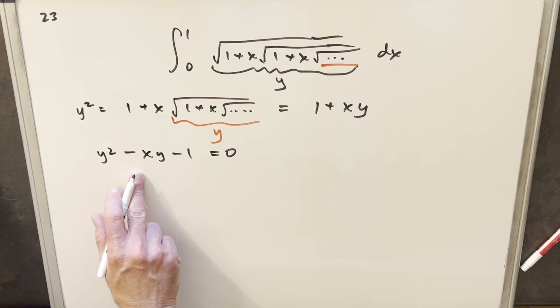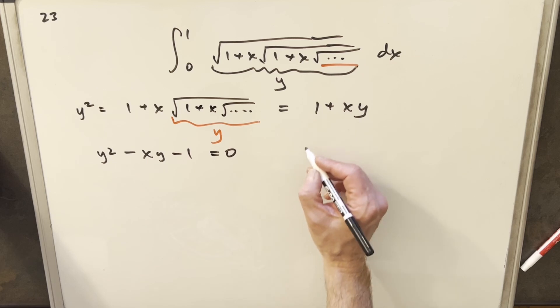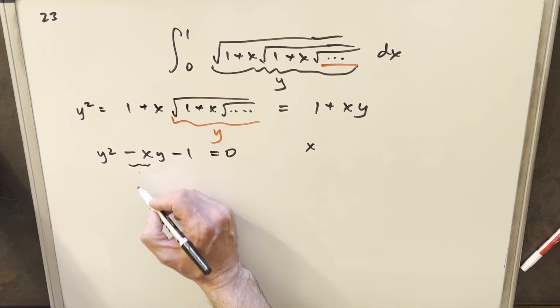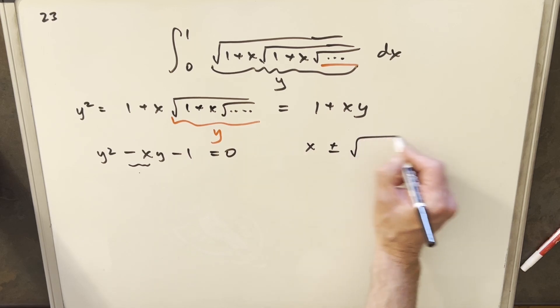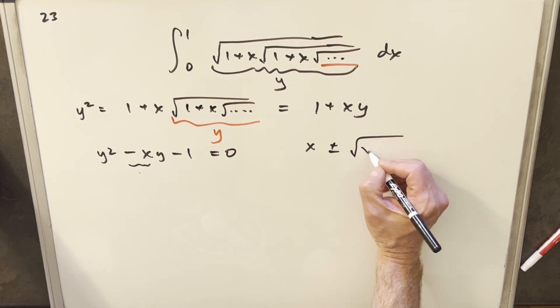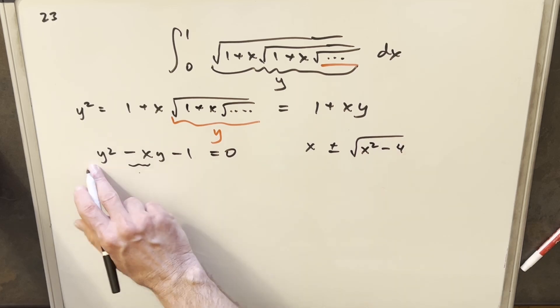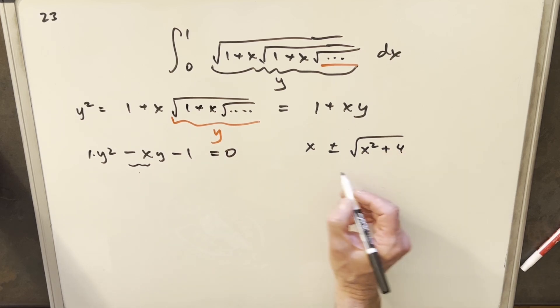That's going to give us a quadratic in y. Let's use the quadratic formula. Our b value is going to be minus x, so we're going to have x plus or minus, b squared is x squared, minus 4ac. a is 1, this is minus 1, so that's going to change our sign to a plus there, all over 2.